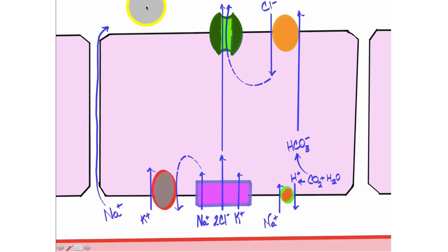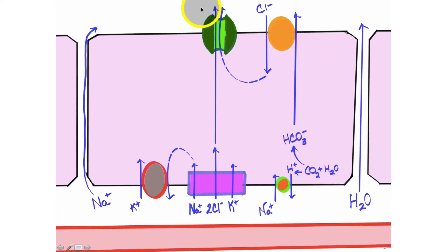Sodium is attracted to the lumen of the duodenum because of all of these anions, because of all of these negatively charged ions, specifically chloride ions. So now we have sodium in the lumen, we have chloride in the lumen, we have a huge buildup of ions in the lumen of the duodenum, which is going to attract water via the process of osmosis into the lumen.